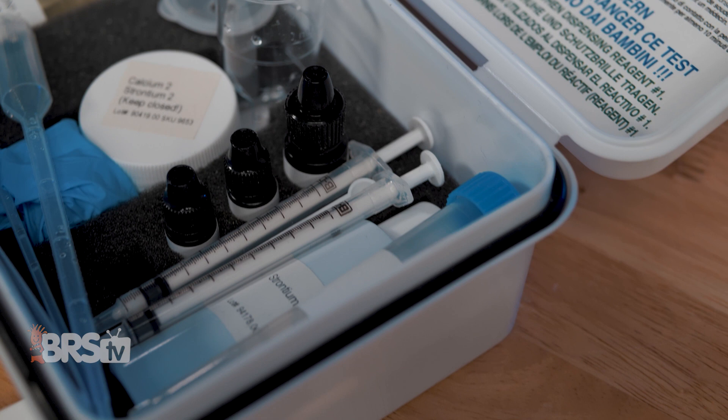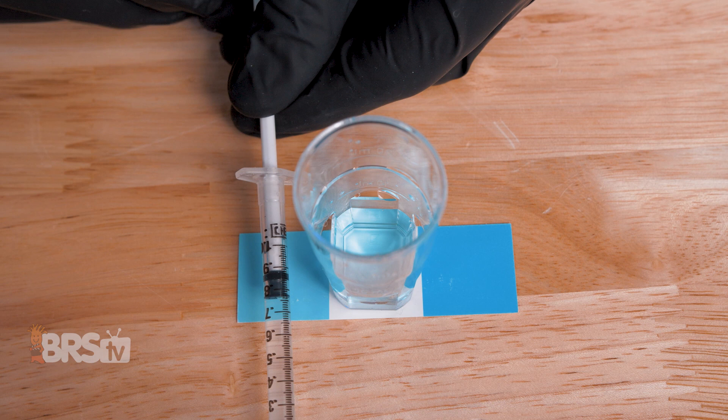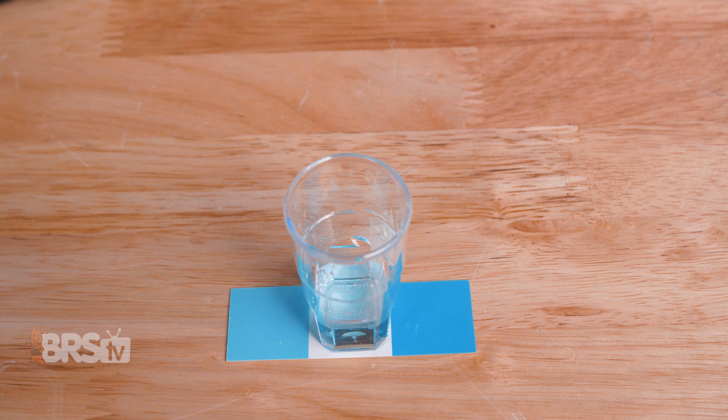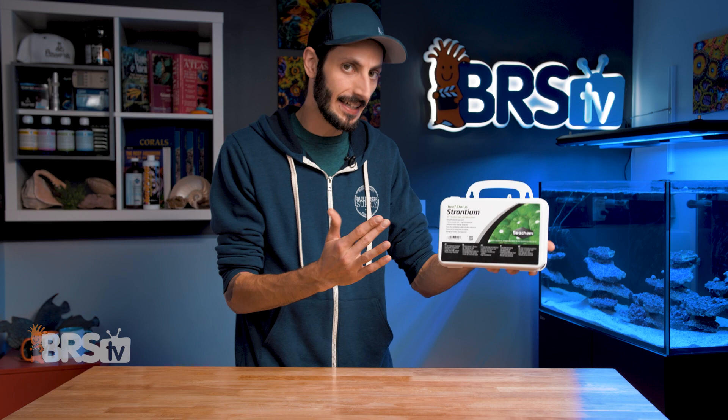It can read strontium in tiny 0.5 part per million increments, which is much more precise than other strontium test kits, and includes a reference solution so you can validate your own testing practices and make sure you're getting accurate results. And it all comes neatly packed in a hard case with a rubber gasket, which is a nice touch.